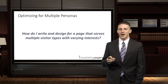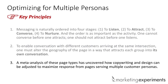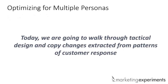Which brings me to the next question: how do I write and design a page that serves multiple visitors with varying interests? The good news is that because we get this question a lot, our team did a meta-analysis of the entire library, looking at pages with this challenge of very distinct visitor groups with very different needs. From that analysis, we uncovered common copywriting and design adjustments that often result in the gains you're looking for. But first, before the tactical changes, let me give you a framework to understand them.